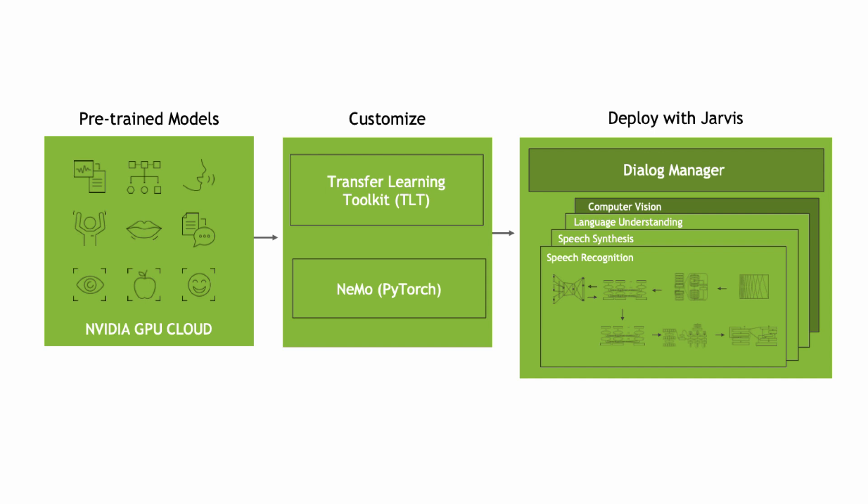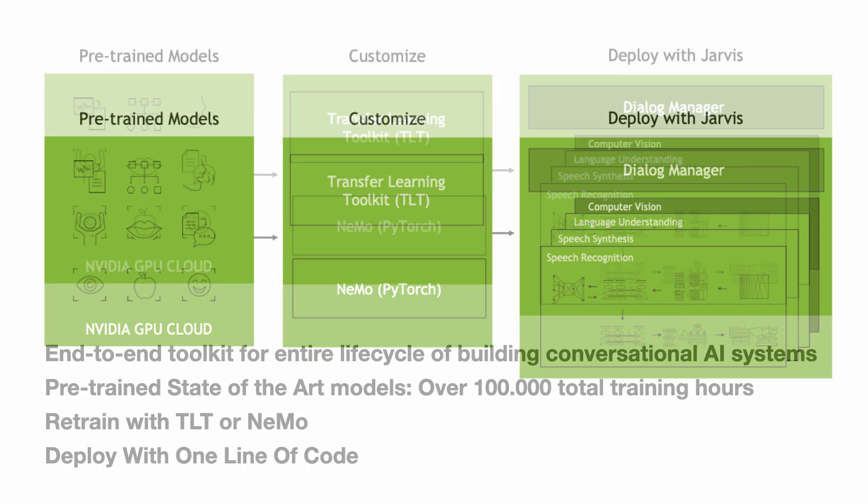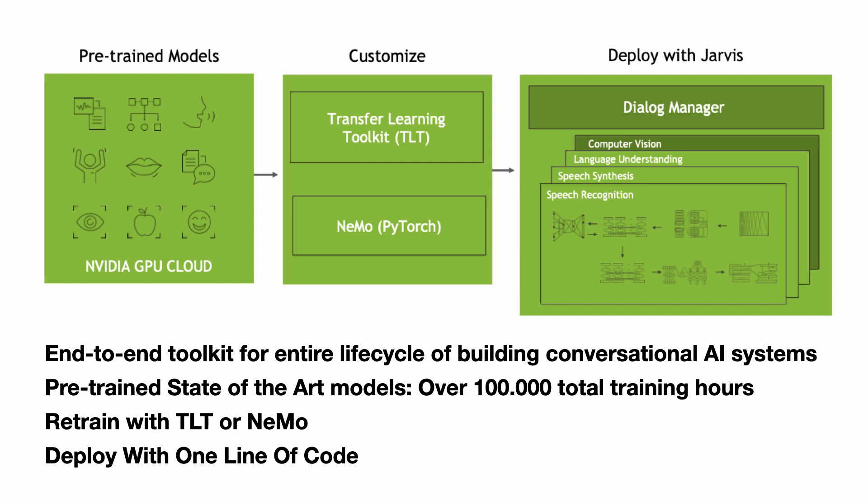Next to those services, you also get pre-trained models. When you want to build a chatbot that performs really well, you need thousands of training samples and thousands of hours to train the model, and a lot of times you just don't have that. So your next best bet is transfer learning — you take a pre-trained model, which is usually a very general model, and then fine-tune it for your specific domain. For example, if you want a chatbot that understands medical terms, you can take a base model from Jarvis, fine-tune it with your own data, and then easily deploy it with one line of code. These pre-trained models in Jarvis are state-of-the-art models with over 100,000 total training hours, which is huge — a real game changer for building advanced AI.